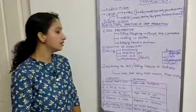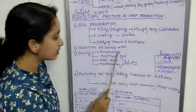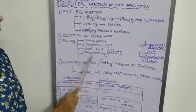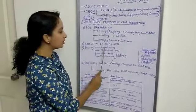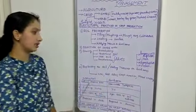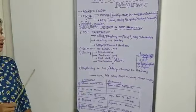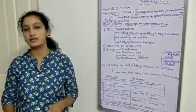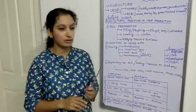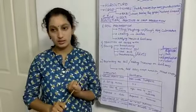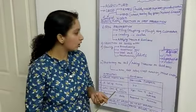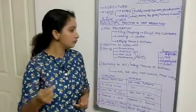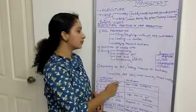Next is sowing. Sowing is done by these methods: broadcasting, traditional tool, seed drill, or transplantation. The first two are manual methods. Broadcasting: we take the seed manually using hand and sprinkle the seeds without thinking about proper depth, proper distance between seeds, or whether they'll be eaten by birds or insects—just sprinkling seeds by broadcasting method.